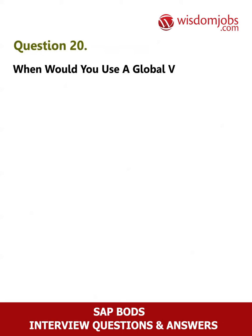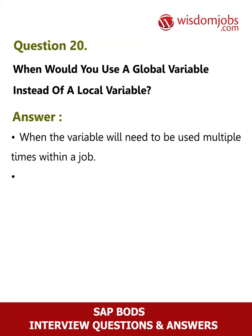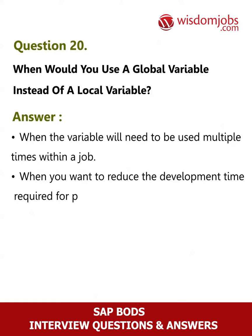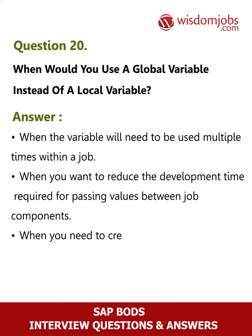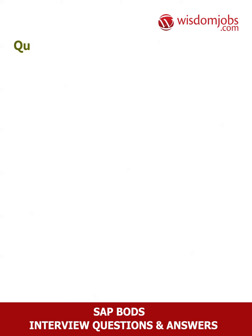Question 20: When would you use a global variable instead of a local variable? Answer: When the variable will need to be used multiple times within a job; when you want to reduce the development time required for passing values between job components; when you need to create a dependency between a job-level global variable name and job components.